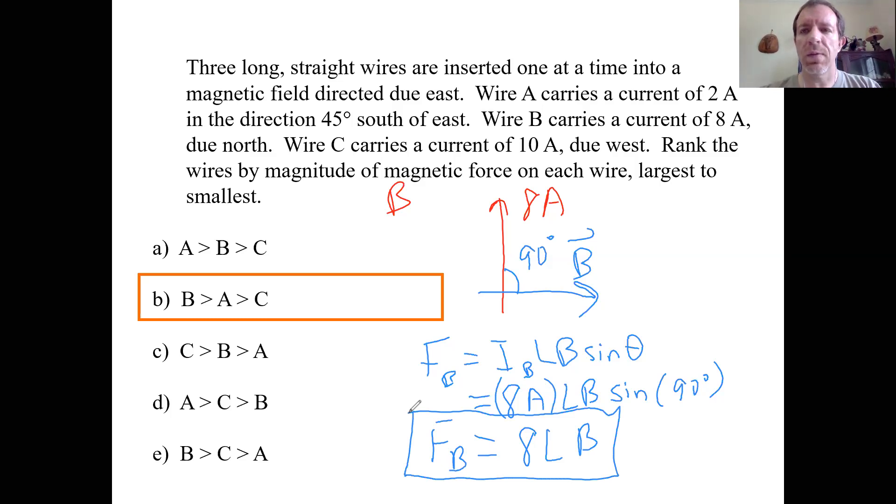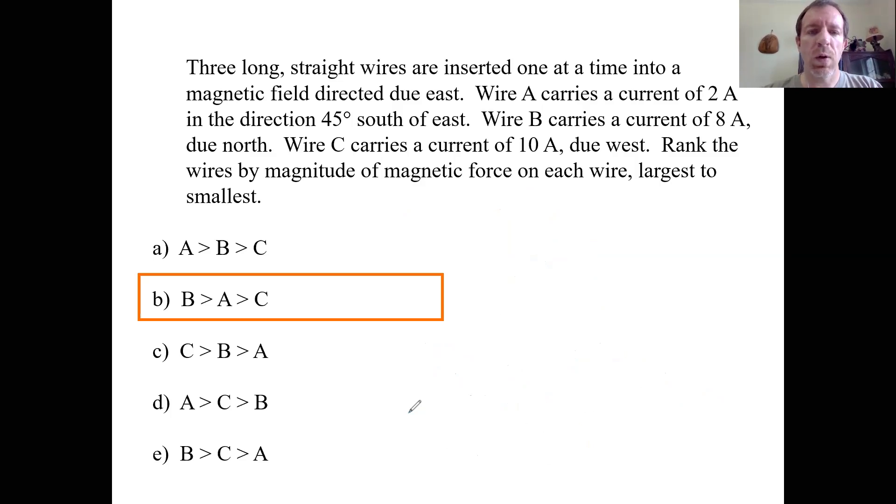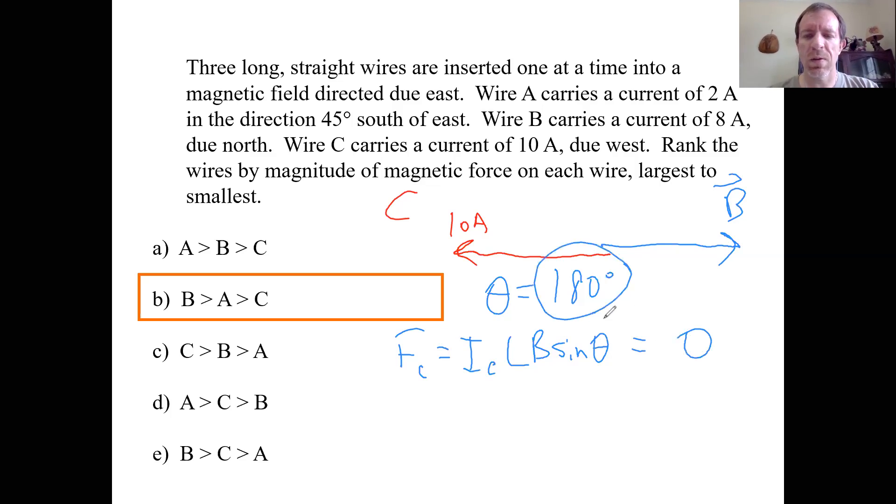All right. Well, what about wire C? Let's see here if we can figure that out. So for wire C, what does it say about wire C? Wire C carries 10 amps of current due west. So 10 amps due west. And we still have the same magnetic field that's going due east. Well, now our question is what's the angle between them? Well, if one's going this way and the other one's going that way, what is it? It's 180 degrees. It reminds me of the Scarecrow, Scarecrow and the Wizard of Oz, right? Some people go that way and some people go the other, well, whatever.